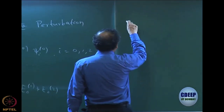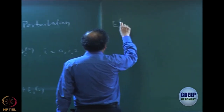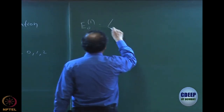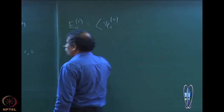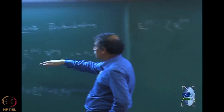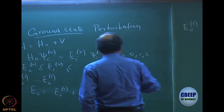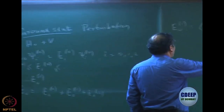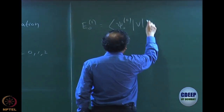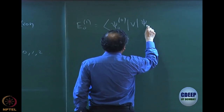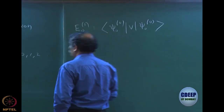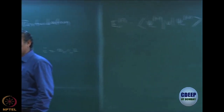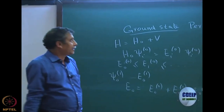We already know E01. The formula is: you take ψ00, which is the ground state eigenfunction of H0, and then take the average value of V with respect to ψ00. That gives you E01. That is the formula which was done quite some time back.